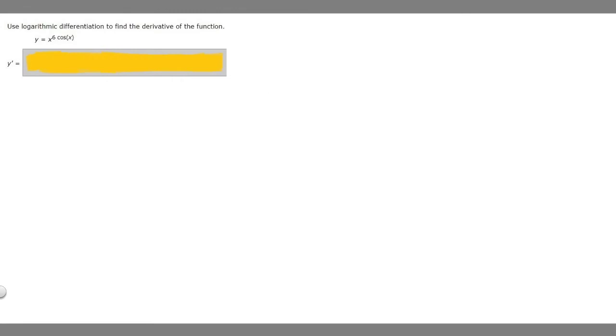In this problem, we're told to use logarithmic differentiation to find the derivative of the function y equals x to the 6 cosine of x. First, I want to talk about what logarithmic differentiation is and when we use it. We use it when we have one function — in this case x — as the base, and another function, like 6 times the cosine of x, as the exponent.